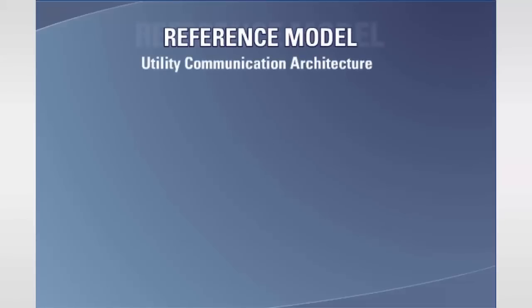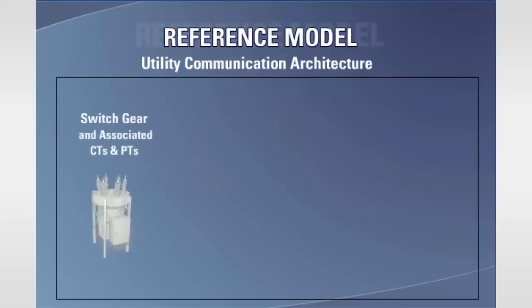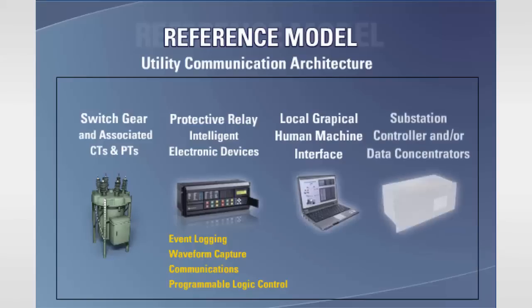To better understand the IEC 61850 protocol, we should start by developing a reference model of the utility communication architecture. From a protective relaying perspective, a typical substation consists of the following parts: switchgear and the associated CTs and PTs; protective relays, which are now more commonly referred to as intelligent electronic devices or IEDs due to their enhanced functionality such as programmable logic, communications, waveform capture, and event logging. The local graphical human-machine interfaces, substation controller, and/or data concentrators are options that may or may not be present within the substation. The control center and the communication links between the devices complete the model.